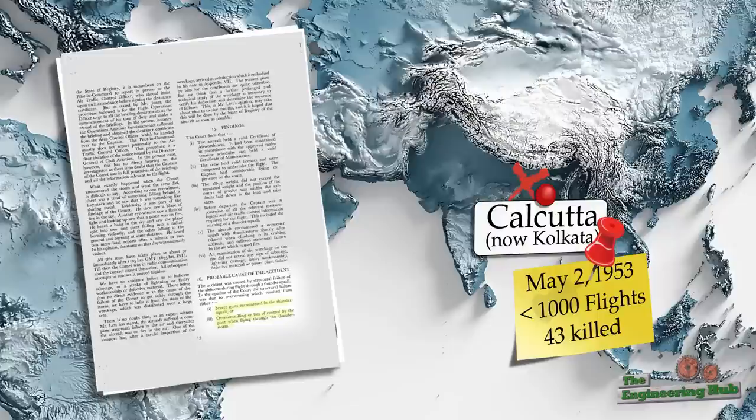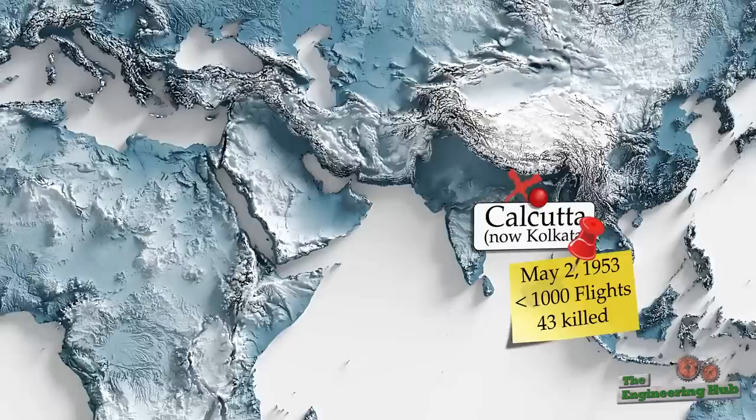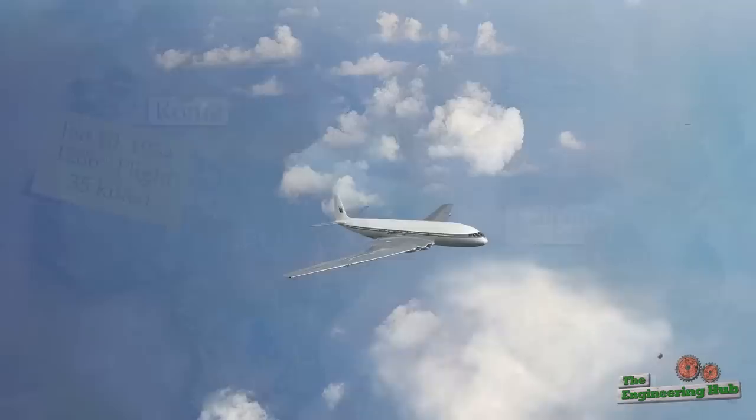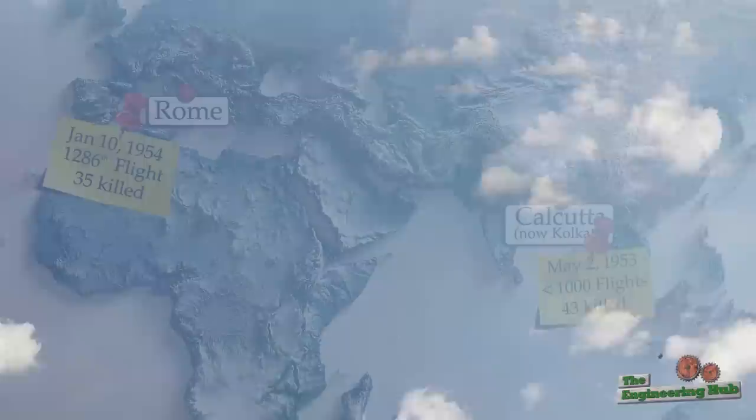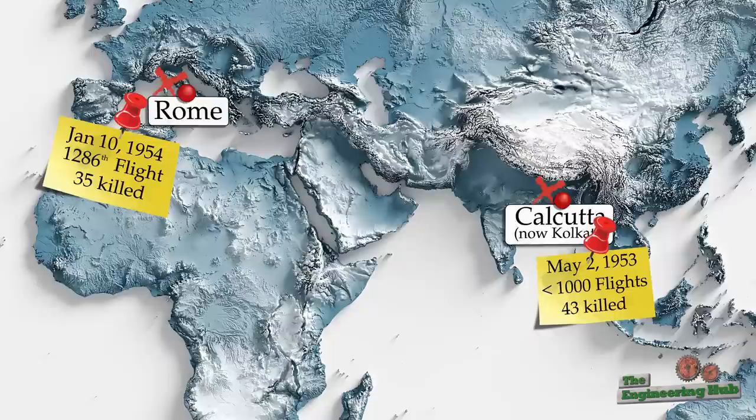Seven months later, on January 10th, 1954, a second very similar crash occurred. It was yet another de Havilland Comet, which exploded mid-air near the island of Elba, but this time in perfect weather conditions. This plane had only flown for 1,286 flights, which was less than 13% of the estimated 10,000 flight design life.